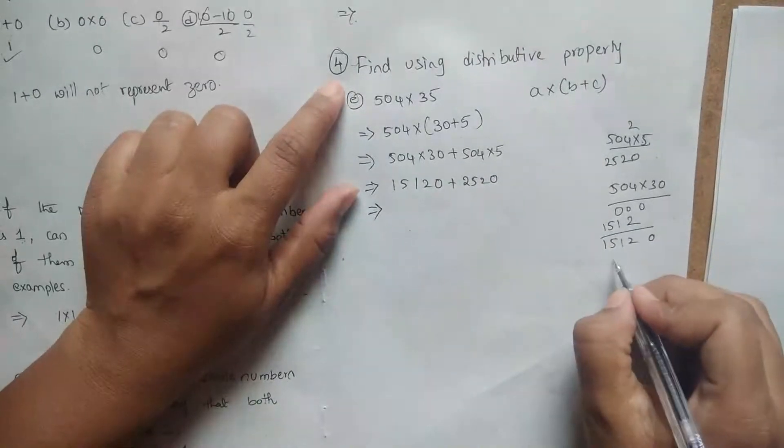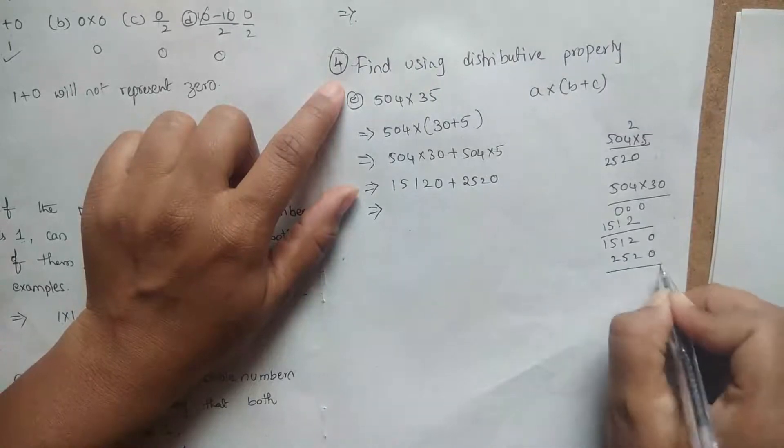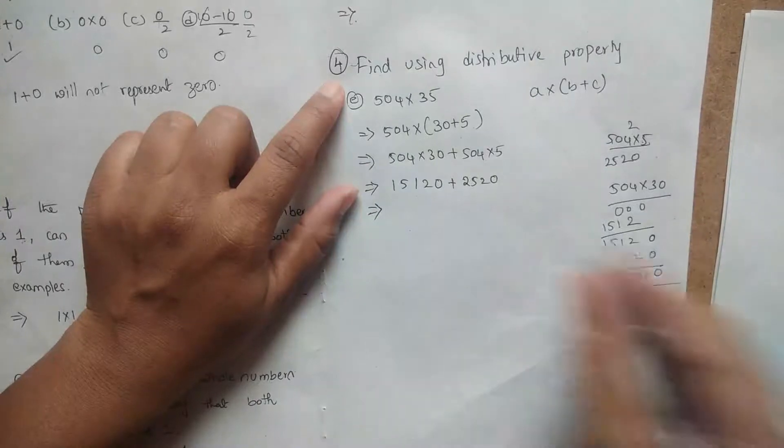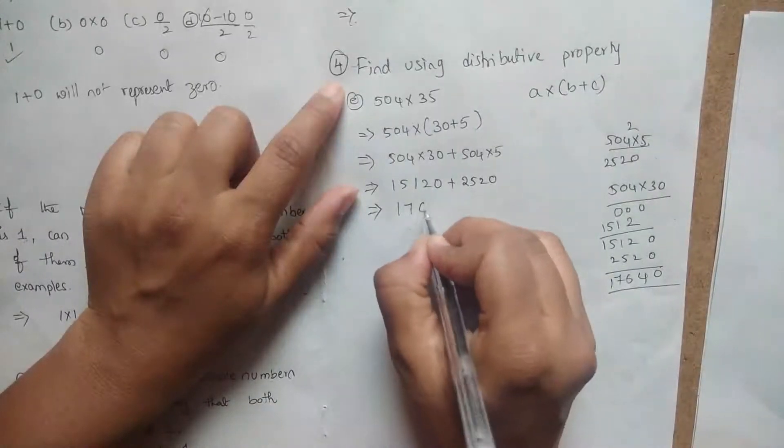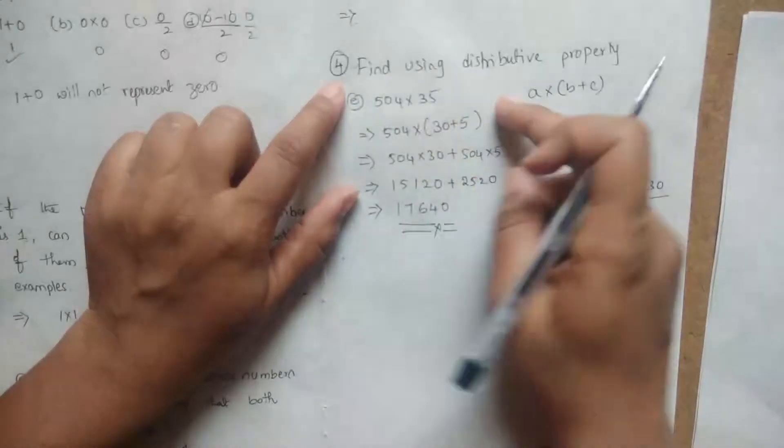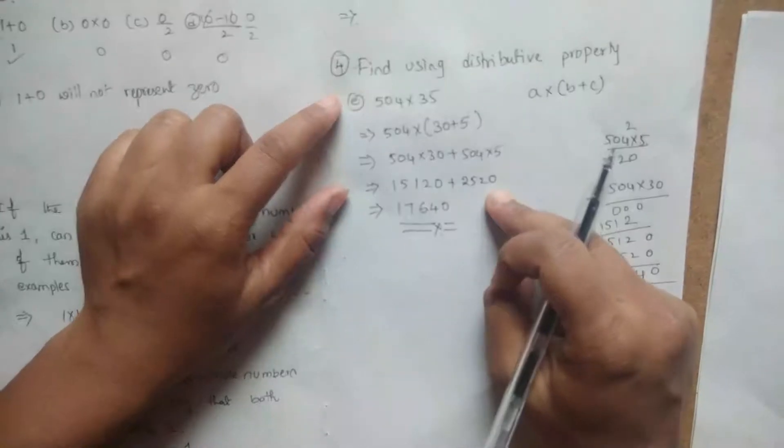Now we have to add it. 2520, 0467 and 1. 17640. This is the answer. This is the way of distributive property explanation.